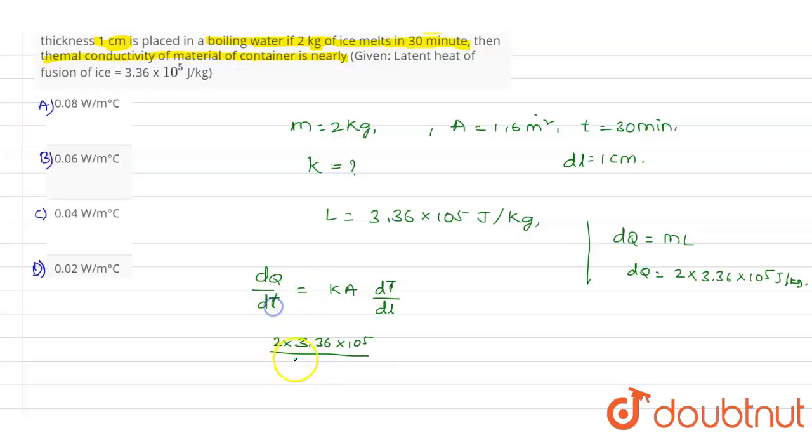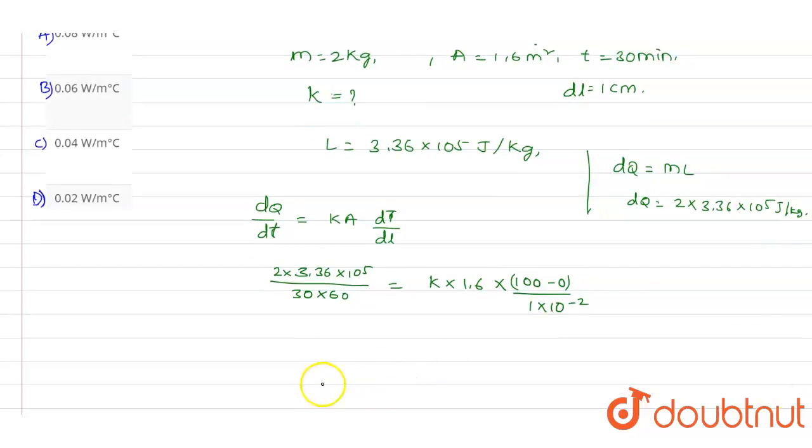Which equals to k into, here k value we don't know, here we need to find. And area value is 1.6 into 100 minus 0 temperatures divided by dL value, which is the thickness, so 1 into 10 power minus 2.